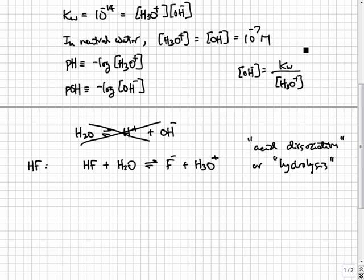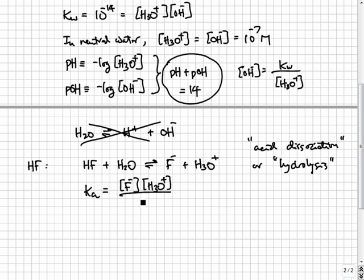Taking the negative log of the KW equation, we see that whenever water is present, pH plus POH must always equal 14. How strongly does HF push protons onto H2O is indicated by the equilibrium constant of the acid dissociation reaction. This is called Ka, or sometimes the acid dissociation constant. For HF, Ka is roughly 7 times 10 to the minus 4.